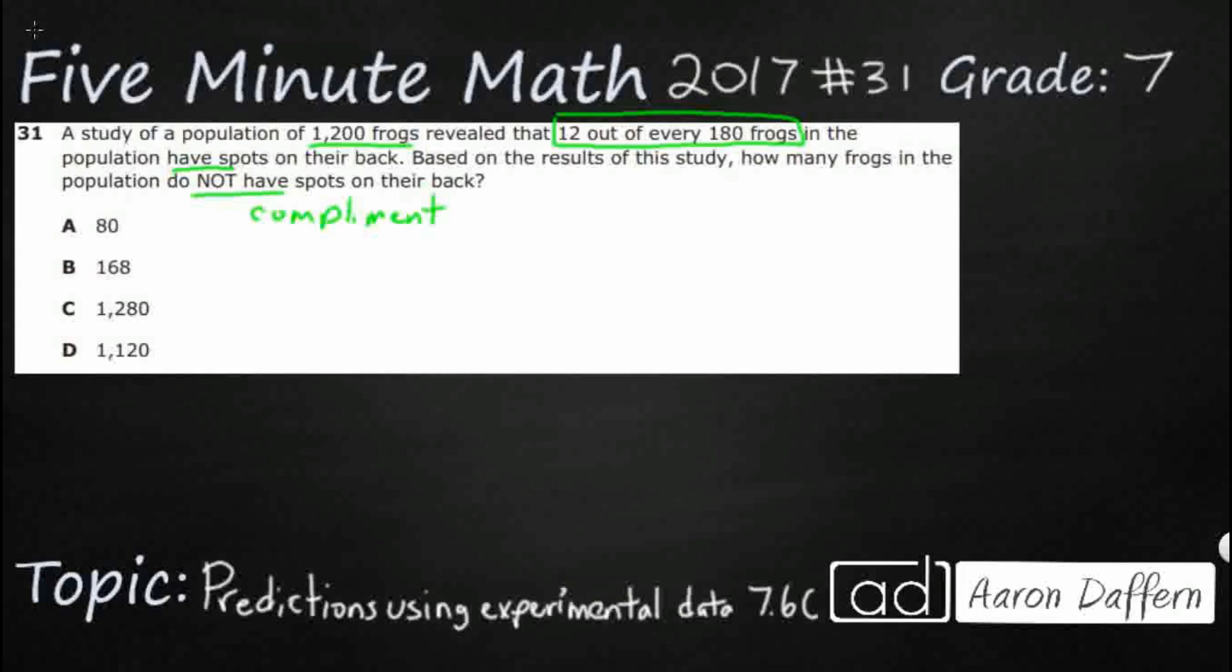I'm actually going to make a proportion here. I'm going to use the 12 out of 180 simply because this has spots. I'm going to put HS over total, and I know I'm looking for does not have spots, but I'm going to look for that out of a total of 1,200. Look at this cross multiplication I'm going to have to do right here. I'm going to have to do 12 times 1,200.